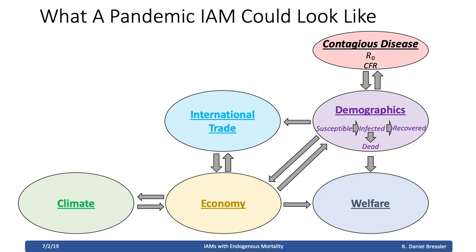Here's a sketch of what modeling a pandemic might look like using this methodology. Integrated assessment models are useful for assessing impacts in systems with coupled economic, demographic, and environmental effects. A recent exercise by the Johns Hopkins Center for Health Security projected that an engineered pathogen created by a terrorist group could cause 150 million global deaths, a 50% decrease in GDP, and a 90% drop in the Dow Jones. A pandemic is another global catastrophic risk with significant mortality effects alongside economic effects. The contagious disease would affect demographics through an SIR model, affect the economy through lower labor force and closed borders, and all these systems would feed into each other.